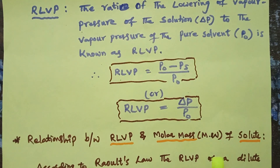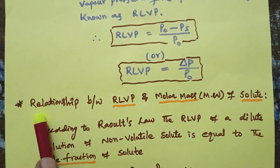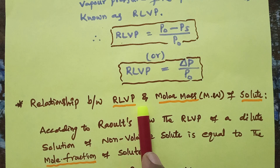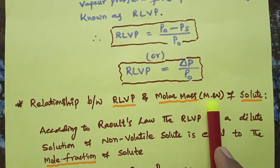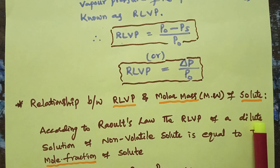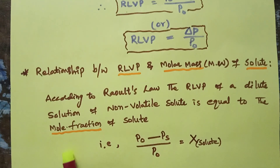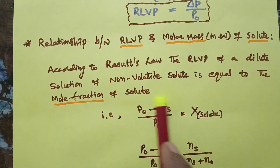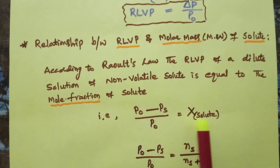This is also written as ΔP / P⁰. According to Raoult's Law, the relative lowering of vapor pressure of a dilute solution of a non-volatile solute is equal to the mole fraction of the solute. That is: (P⁰ − Ps) / P⁰ = mole fraction of solute.